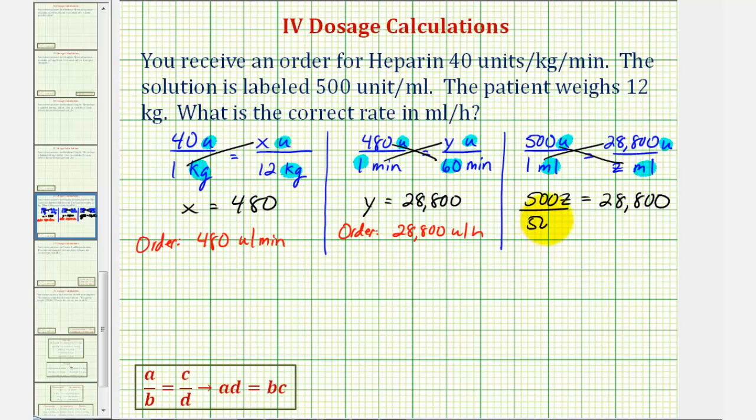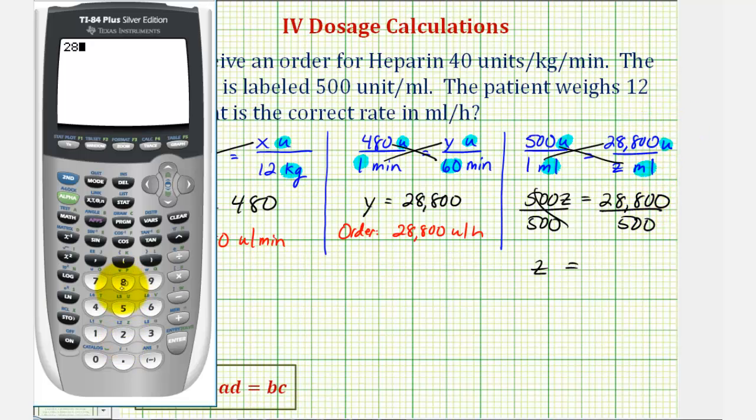Divide both sides by 500. We have z equals this quotient here. We'll go ahead and use the calculator. 28,800 divided by 500.